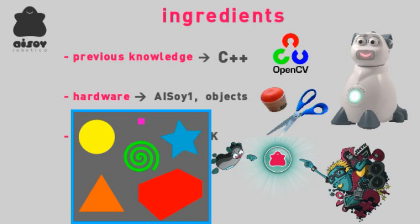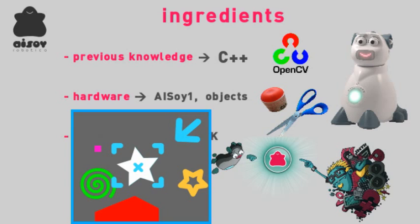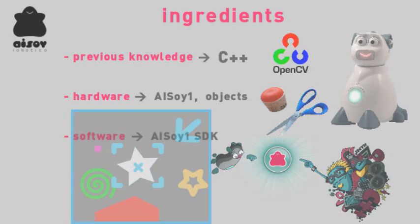Once we know where the important data is, we can estimate the position of the object in the image. Then Isoi1 can calculate where to move the head to track it. Quite simple, isn't it? Now let me show all this working in a bot app.